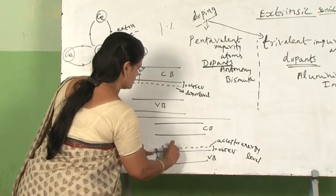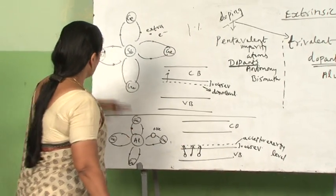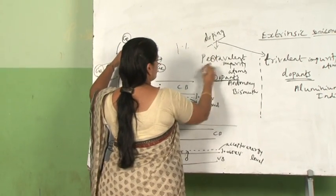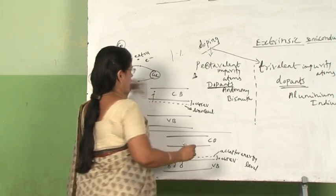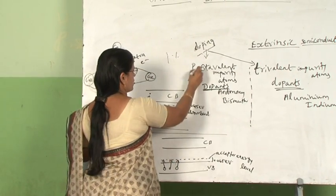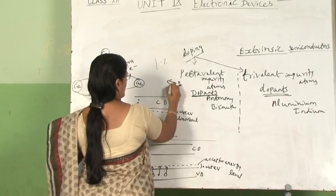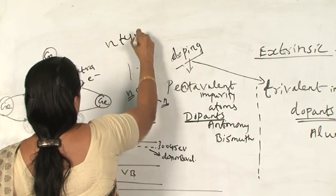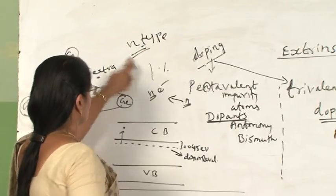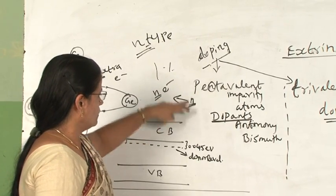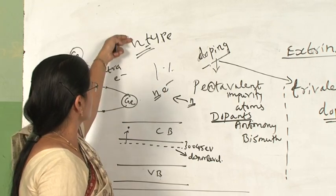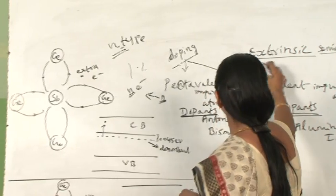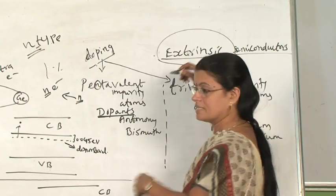By addition of pentavalent impurity atoms, more negatively charged electrons are added to the crystal lattice. The semiconductor produced has negatively charged electrons as the majority carrier and is called an N-type or N-type extrinsic semiconductor. The 'N' helps you remember: pentavalent gives more negatively charged electrons.